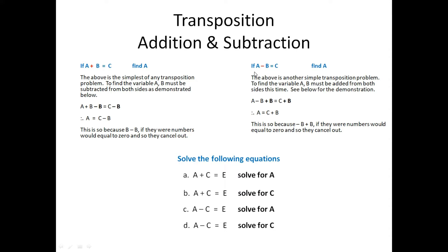Here is another one. If you had a minus b equals to c and you were supposed to find a, then since b is negative — because whatever sign is still left of the variable, that is what it is. Once you have no sign in front, that means it's positive. So a and c are positive, while b is negative.